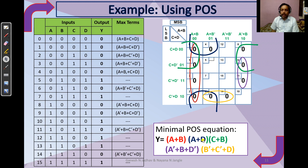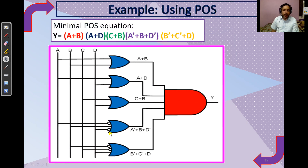Reading the groups: For the red group of 4, non-changing is A plus B. For the blue group, non-changing gives A plus D. For the green group, non-changing gives C plus B. For the purple pair, it is A-dash plus B plus D-dash. For the yellow pair, it is B-dash plus C-dash plus D. Combining all: the minimal POS requires four OR gates and one AND gate to implement the control press circuit.